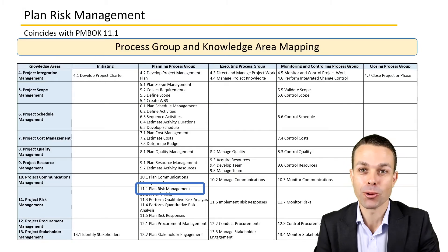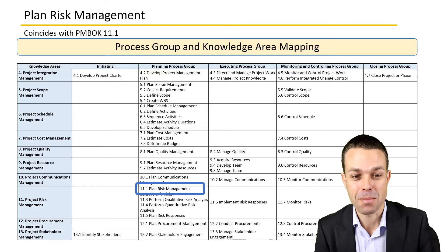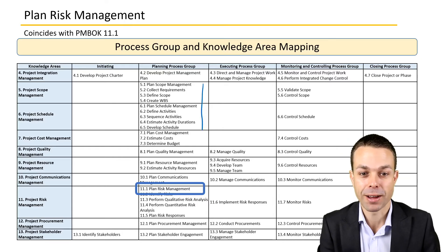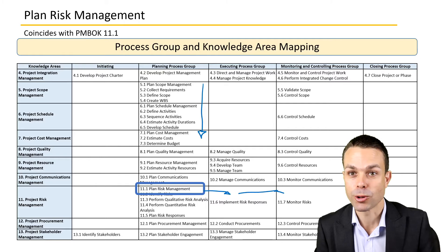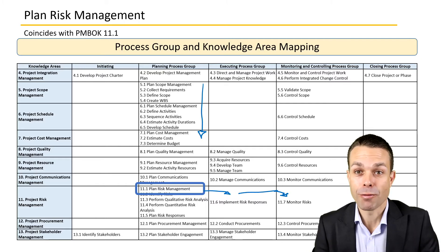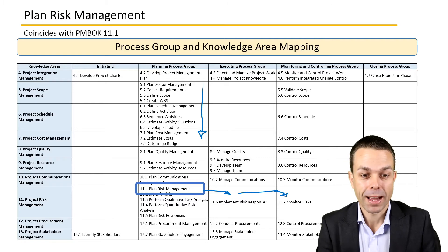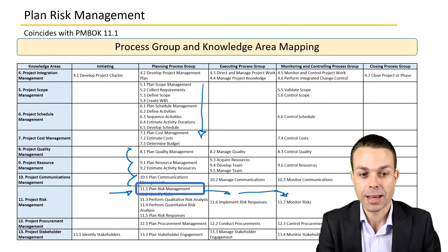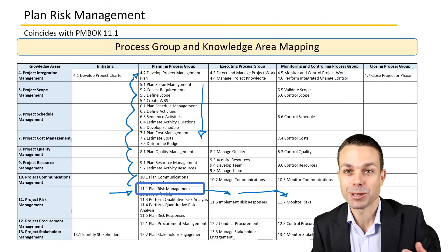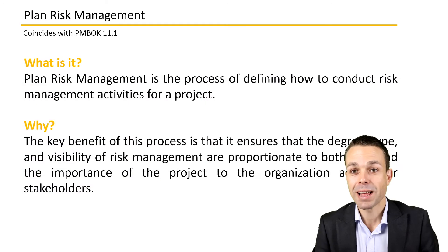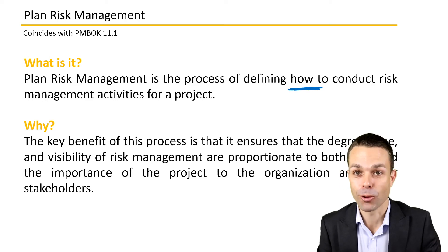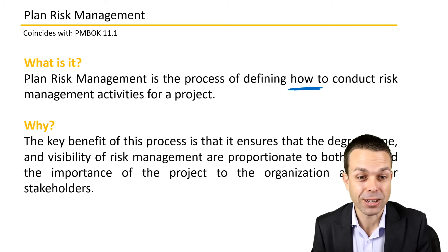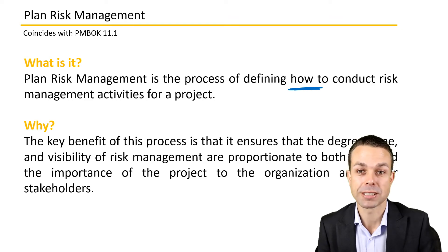Where does planning risk management fall in the overall process group and knowledge area mapping in the PMBOK guide? We're in our planning phase mostly, and there are other risk categories like implementing our risk responses and monitoring the risks as we go along. But this is where we're actually planning the process of how we're going to manage the risk of our project, and that's where we start with our risk management plan. All these different plans will feed into our overall project management plan. Planning risk management is the process of defining how we're going to conduct our risk management activities for the project. The key benefit is that it ensures the degree, type, and visibility of all risk management activities are proportionate to both the risks and importance of the project.